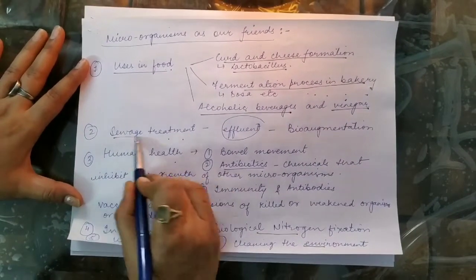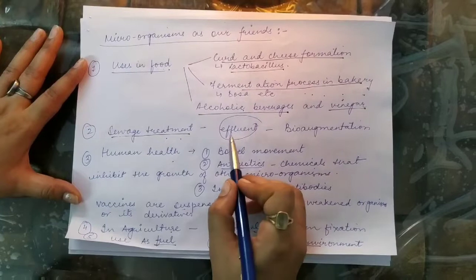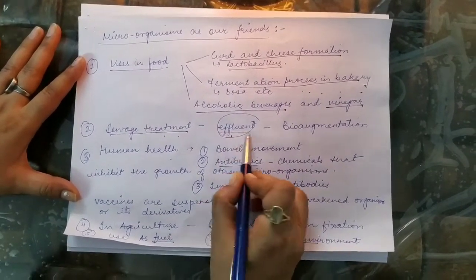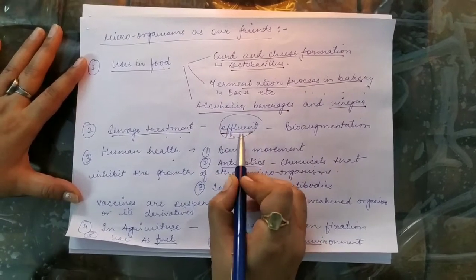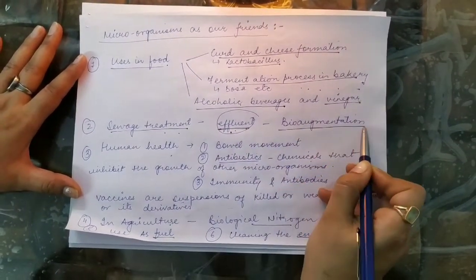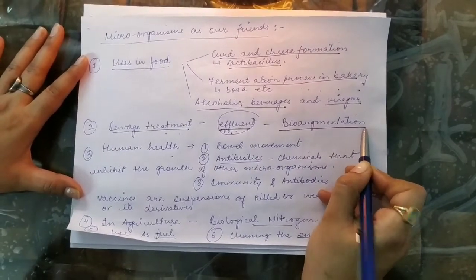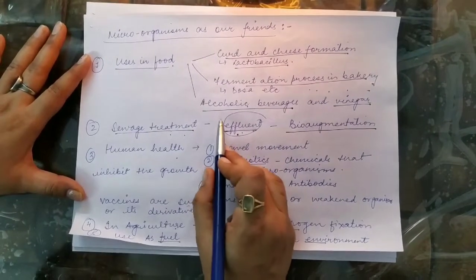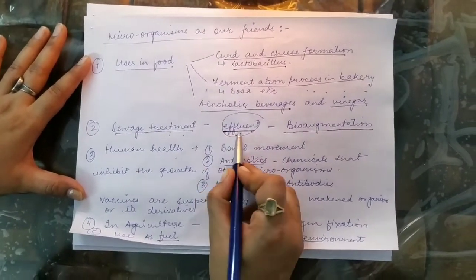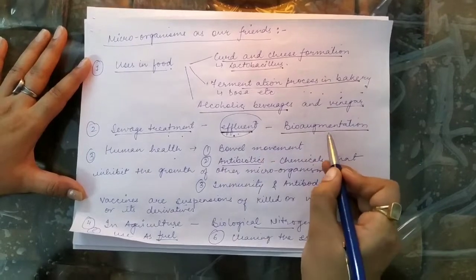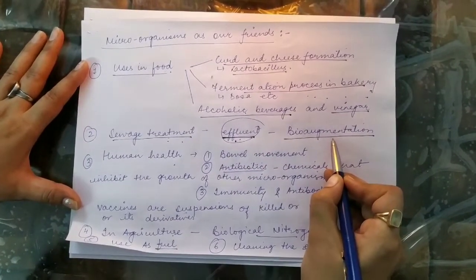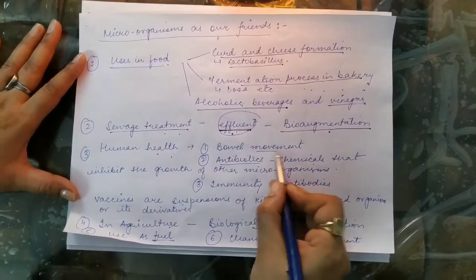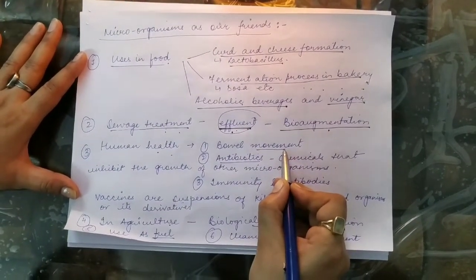In sewage treatment, industrial and domestic waste materials are called effluents, and the process of treating them is called bio-augmentation. Microorganisms also play a role in human health — they help in bowel movement and the movement of food in the intestines of humans and animals.